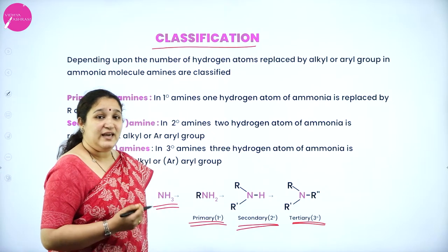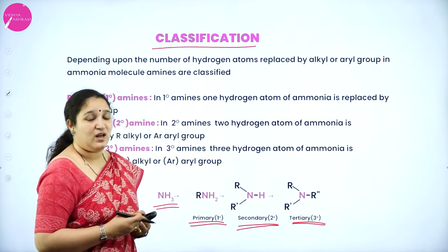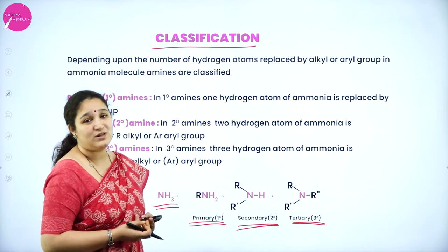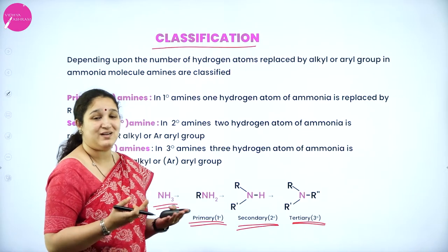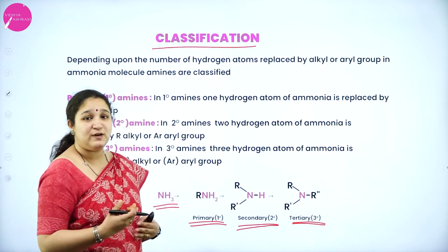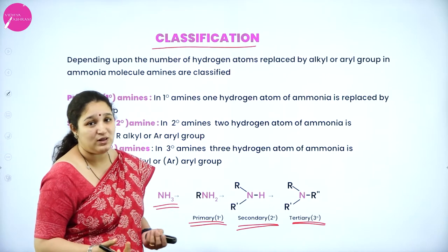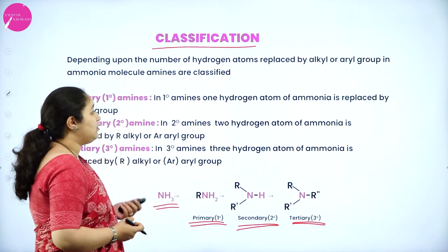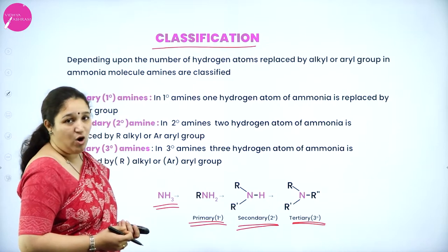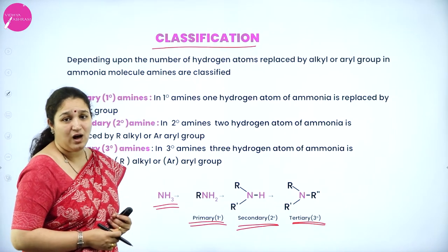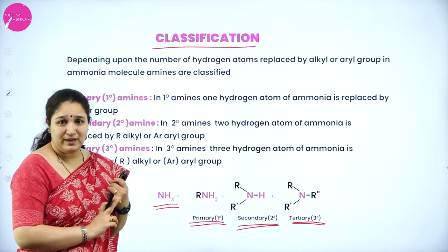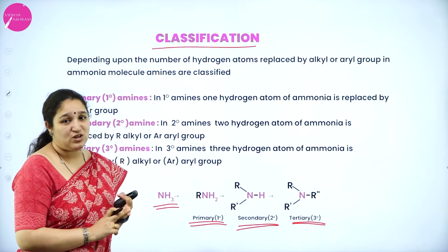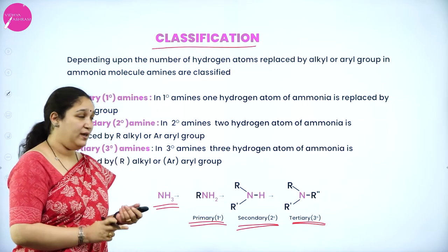In an amine, if there are two alkyl groups and both are the same, we call it a simple amine. If they are different, we call them mixed amines. So that's about the classification of amines: primary amine, secondary amine, and tertiary amines.